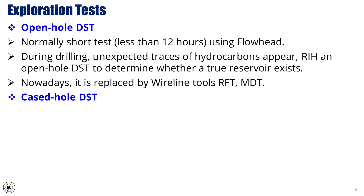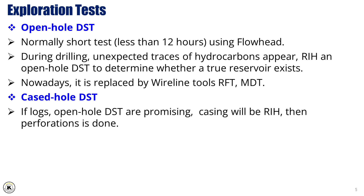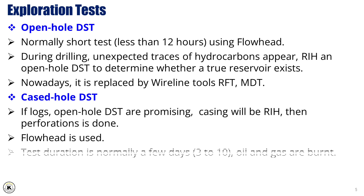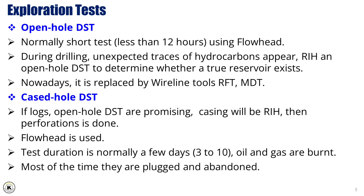The cased hole DST is performed after a casing is run into the well and is typically conducted when open hole DSTs or logs suggest promising reservoir properties. Perforations are done in the casing to allow the test to measure flow characteristics, and the flow head is used to manage and measure production during the test. The test is usually conducted for a few days, between 3 to 10 days, during which oil and gas are typically burnt off to ensure safety and pressure control. Results from the test help confirm the reservoir's potential, and in many cases the well may be plugged and abandoned after the test.